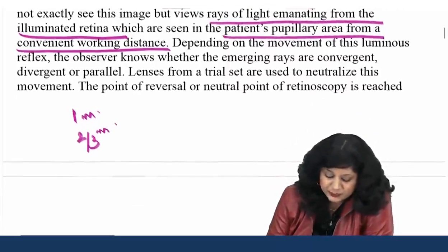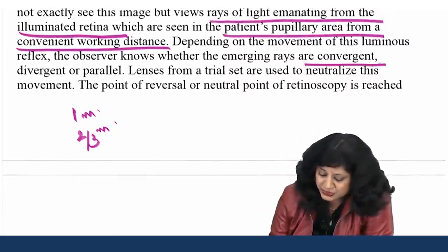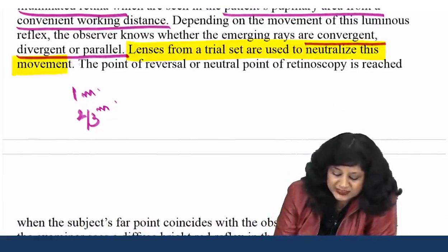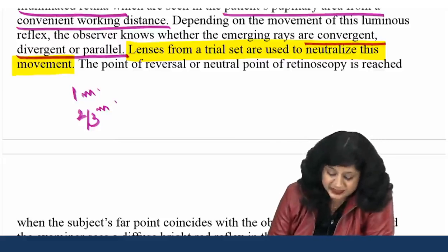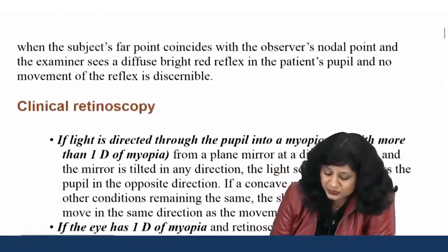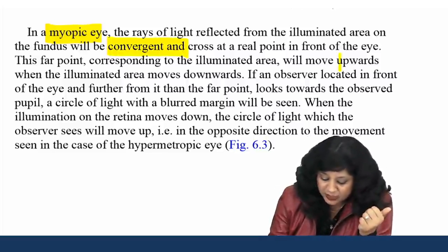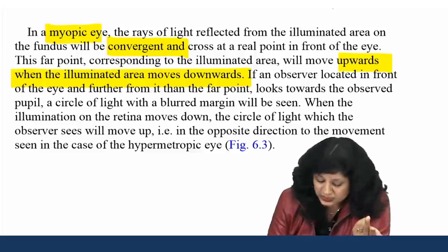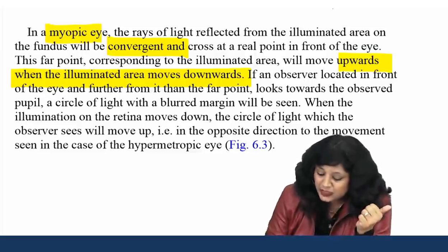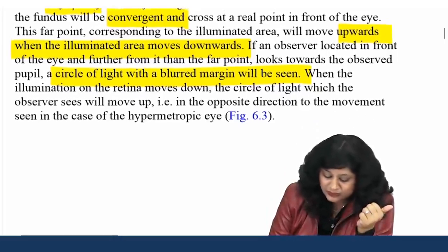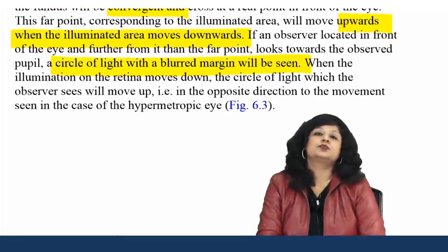Now the equipment: the source of light for retinoscopy could be external, directed into the patient's eye with a mirror retinoscope, or it could be internal, like the self-illuminated retinoscopes available today with a bulb inside. The oldest is the Prisley-Smith retinoscope — a mirror retinoscope with a plain mirror at one end and a concave mirror on the other. Both mirrors have a central hole 2.5 mm wide anteriorly and 4 mm wide posteriorly, fitted with a low-power convex lens for viewing the reflex. Either mirror can be used for retinoscopy.